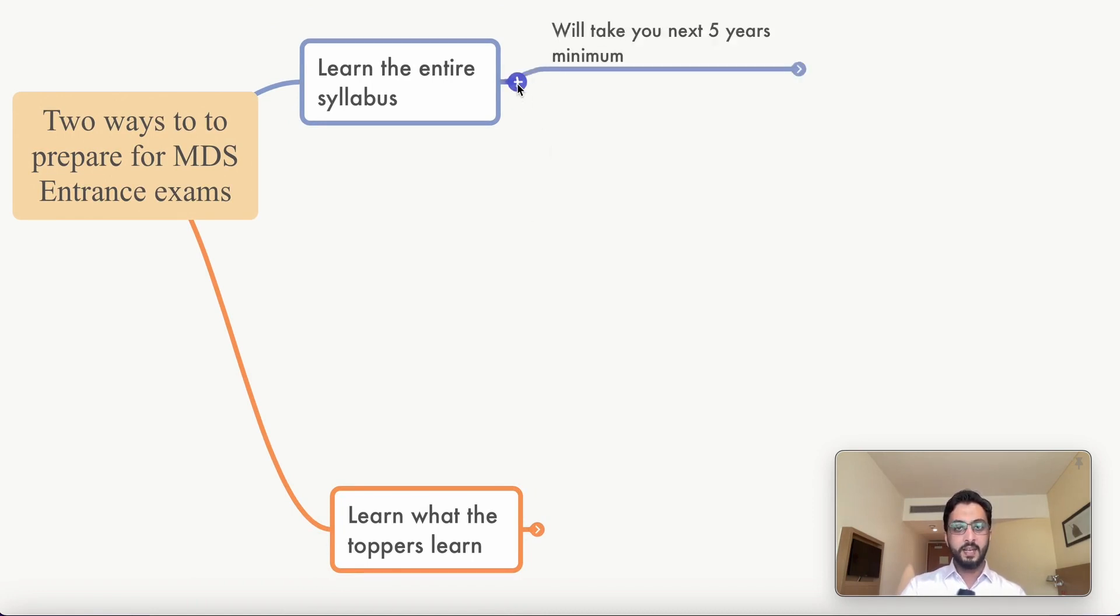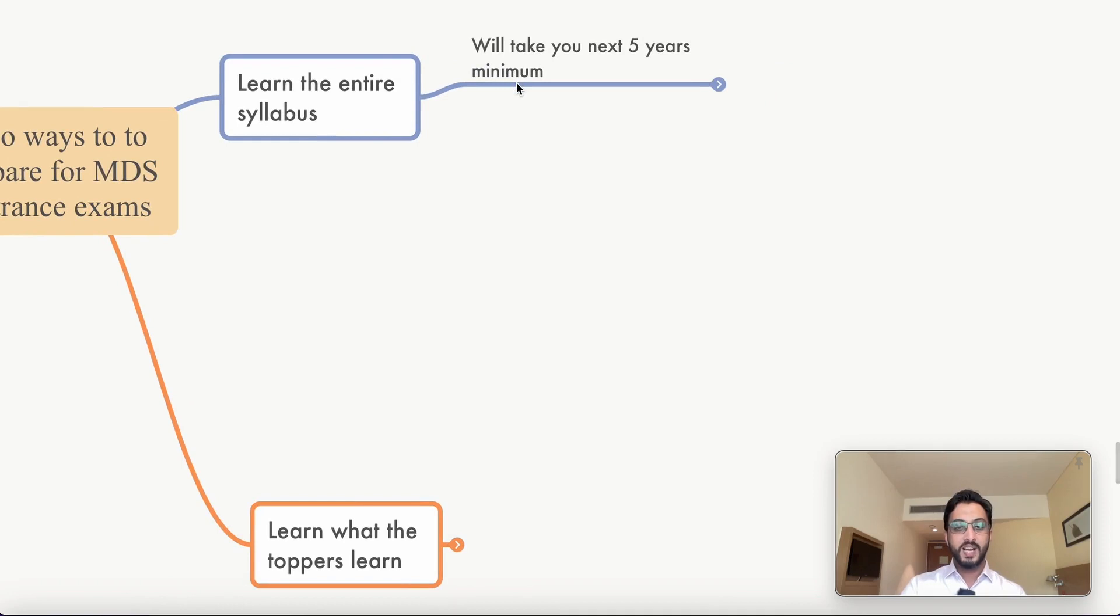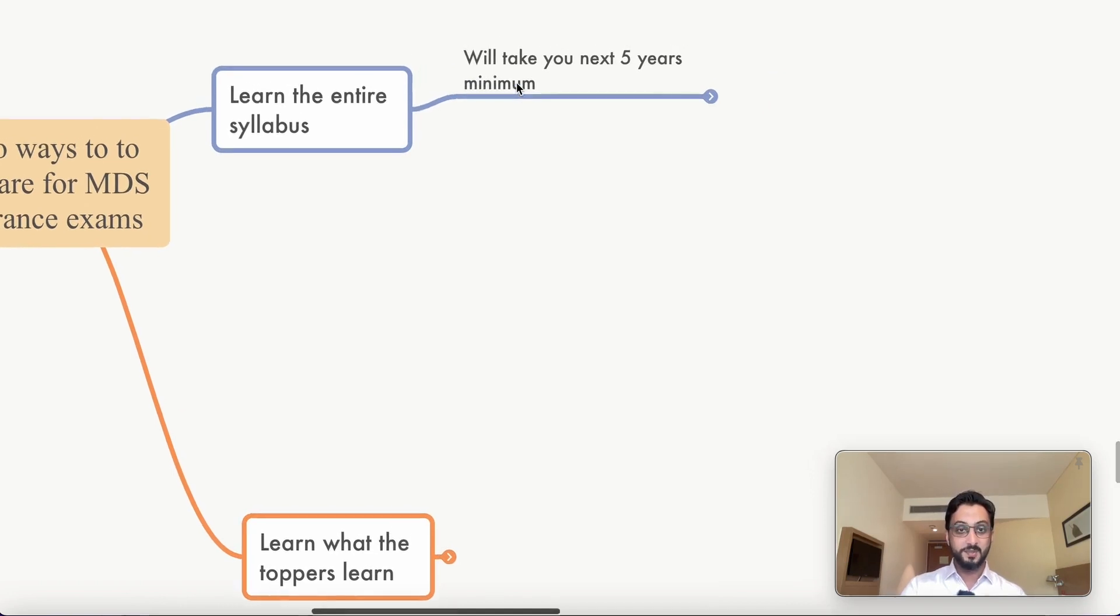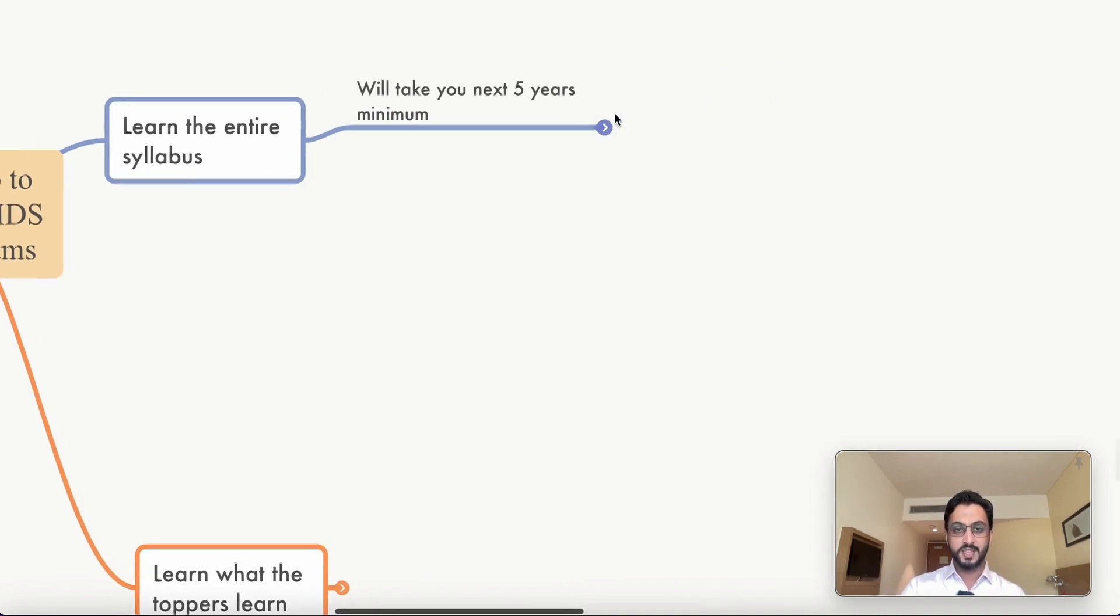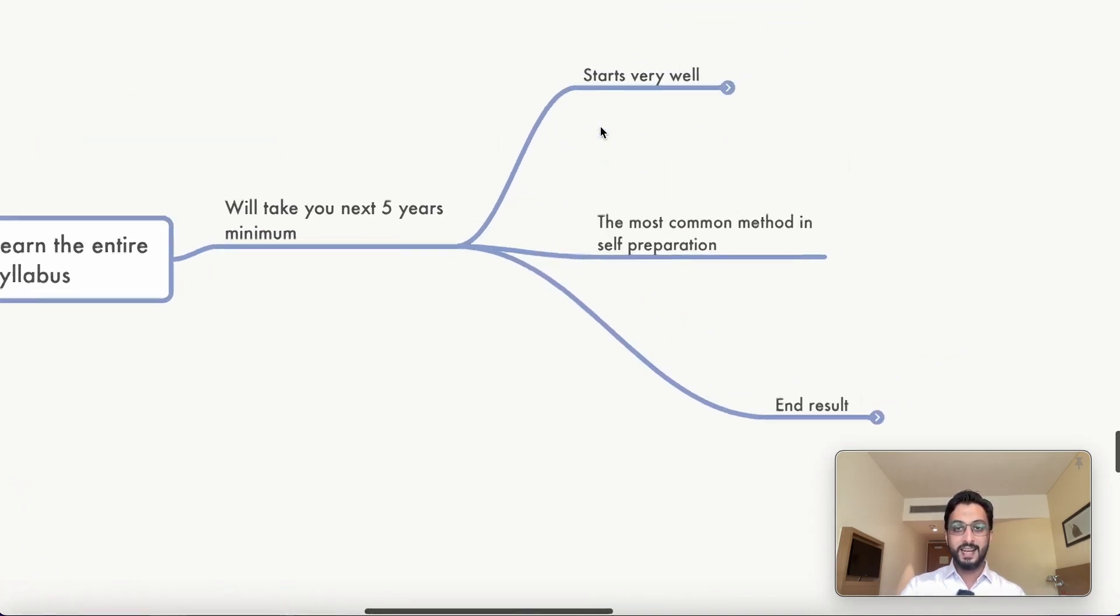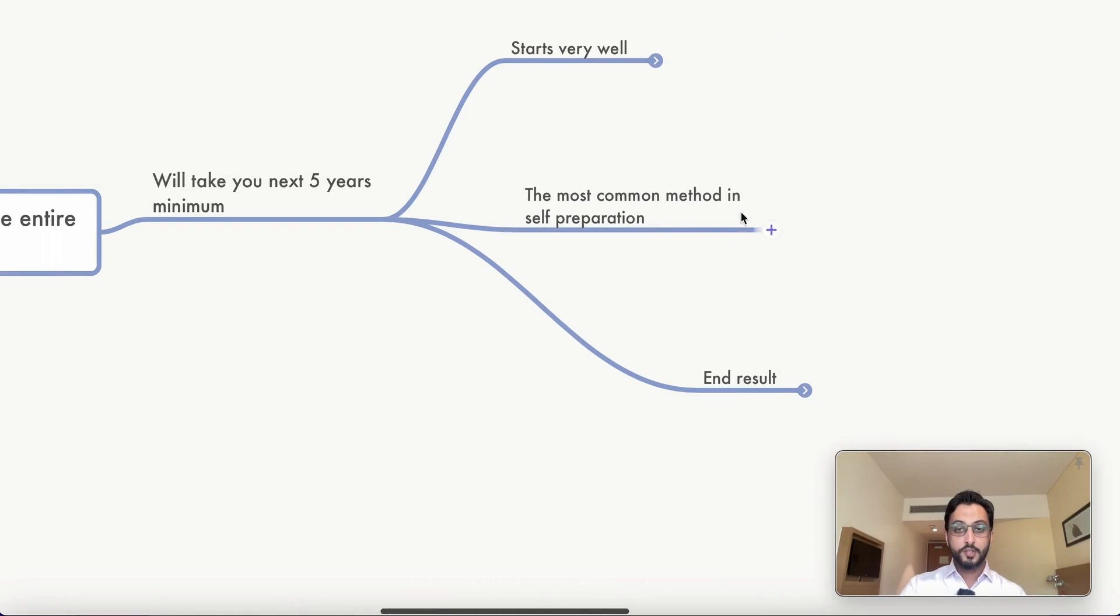These are the two ways people follow. One is learn the entire syllabus. And the second is learn what the toppers learn. These two are different things. Let us look into that in depth. Learn the entire syllabus will take you around next five years. Trust me, it's true. Entire syllabus is so huge, it is almost impractical. And you will see that this is the most common method of people who do the self preparation.